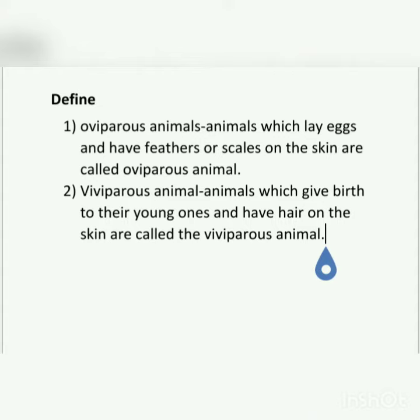Number 2: Viviparous animals. Animals which give birth to the young ones and have hair on skin are called viviparous animals.